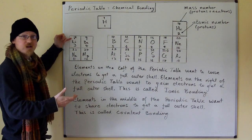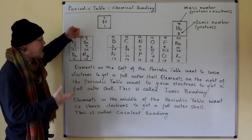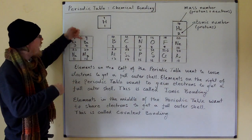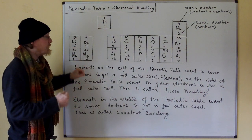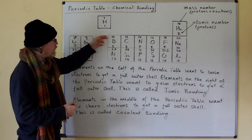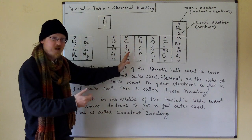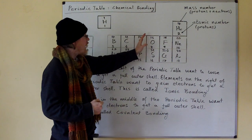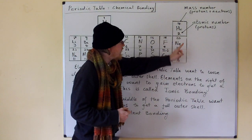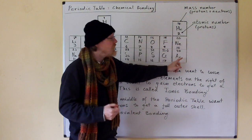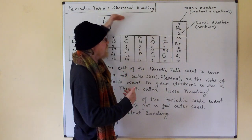Lithium has one electron in its outer shell, and so has sodium. Beryllium in group 2 has two electrons in its outer shell, as has magnesium, and so on. Boron and aluminium have three. Group 4 have four electrons in their outer shell, then five, six, seven, and then for neon and argon eight — where we know helium only has two because it's in the first layer.